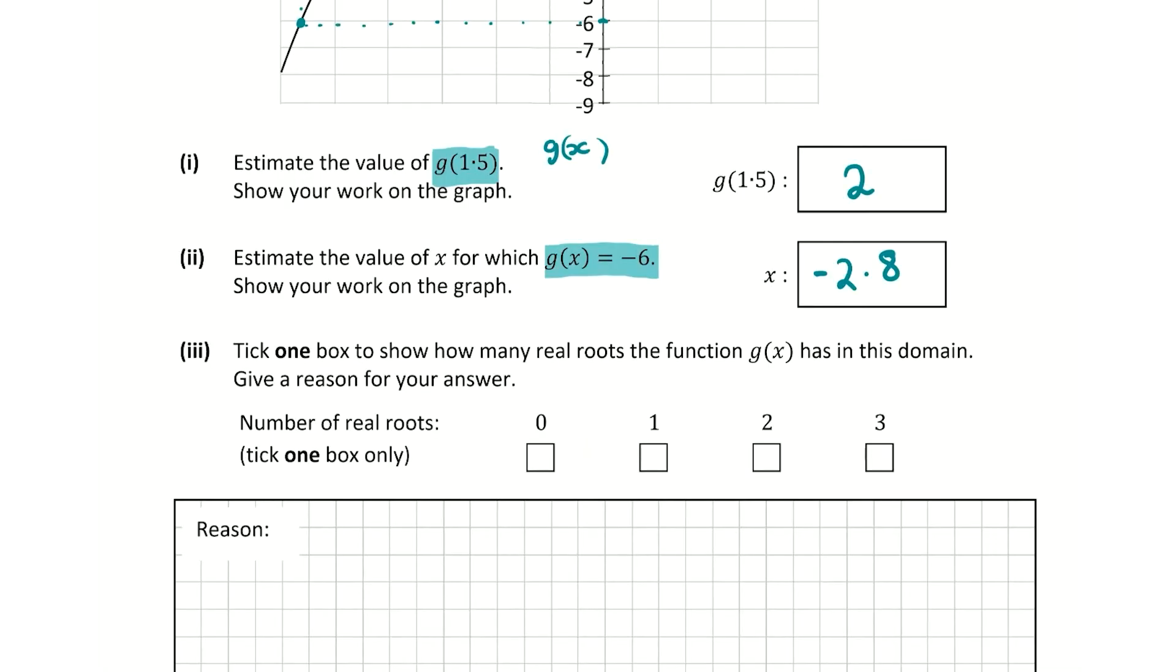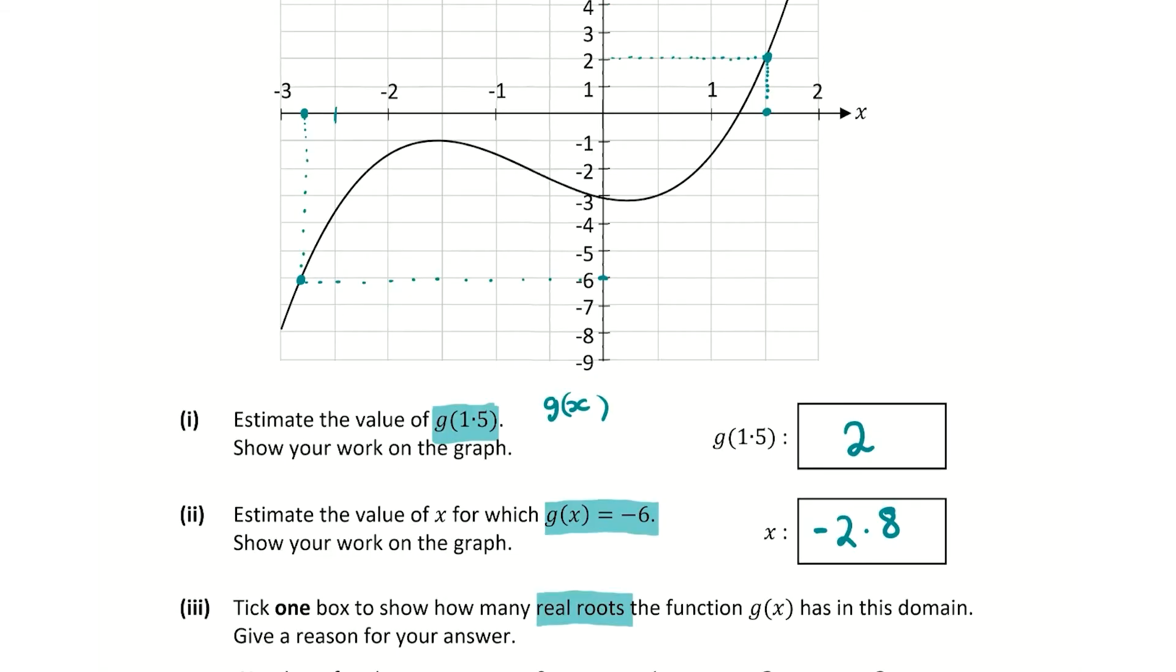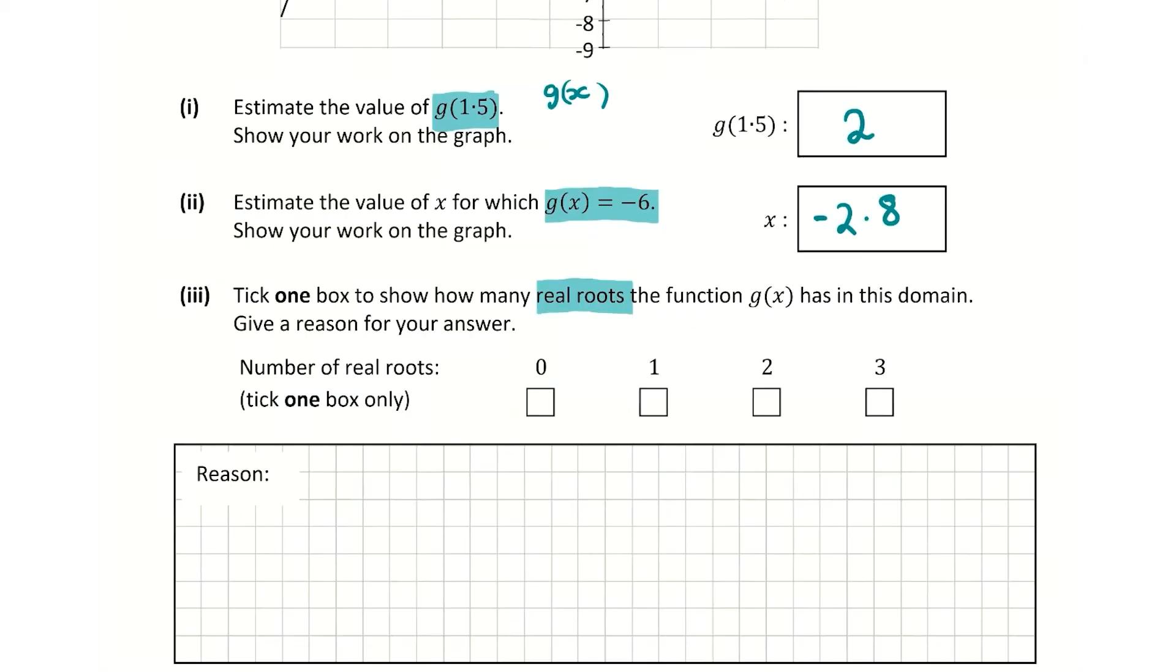The third part asks us to tick one box to show how many real roots the function g(x) has in this domain. Real roots are how many times it hits the x-axis, and we can see it only hits the x-axis once. So there's one real root, and the reason is because it only hits the x-axis once. For getting the correct answers to the first three questions, you're going to get a total of 10 marks out of the 30.